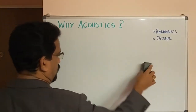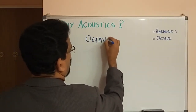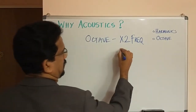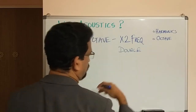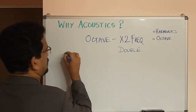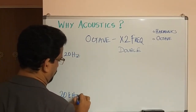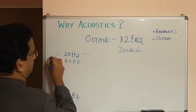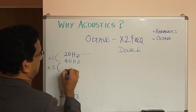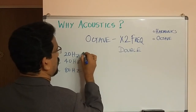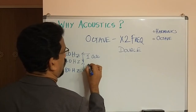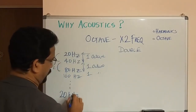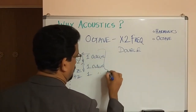Now coming to octave — what is an octave? An octave is a very simple term: it is the doubling of frequency. When you double a particular frequency, that is one octave. Now, if we take the frequency range from 20 Hz to 20 kHz: double of 20 Hz is 40 Hz — that is one octave. Double of 40 Hz is 80 Hz — that is another octave. Then 80 to 160 Hz is one octave. Going all the way up to 20 kHz, there will be almost 10 octaves.